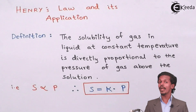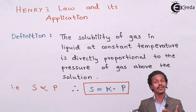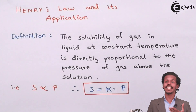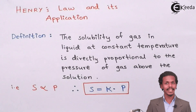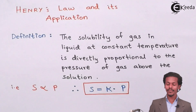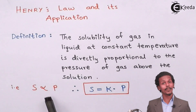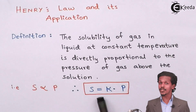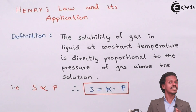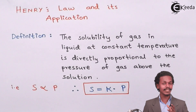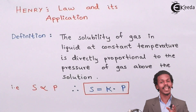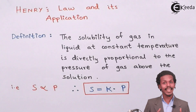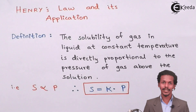It means if you apply more pressure then the solubility of gas will be more, and if you apply less pressure then the solubility of the gas in liquid will be less. This is given by the formula: S is directly proportional to P, therefore S = K × P, where K is Henry's constant, S is the solubility of the gas in liquid, and P is the pressure applied on the gas to get it dissolved in the liquid.